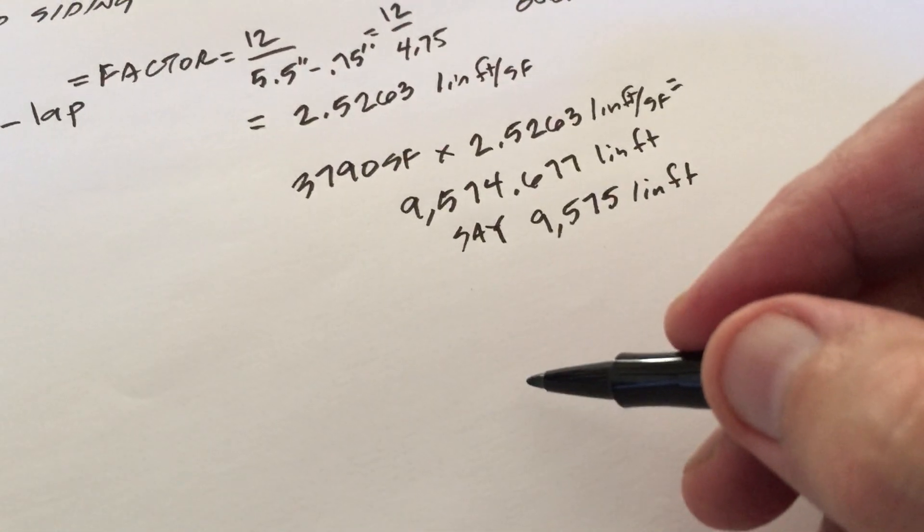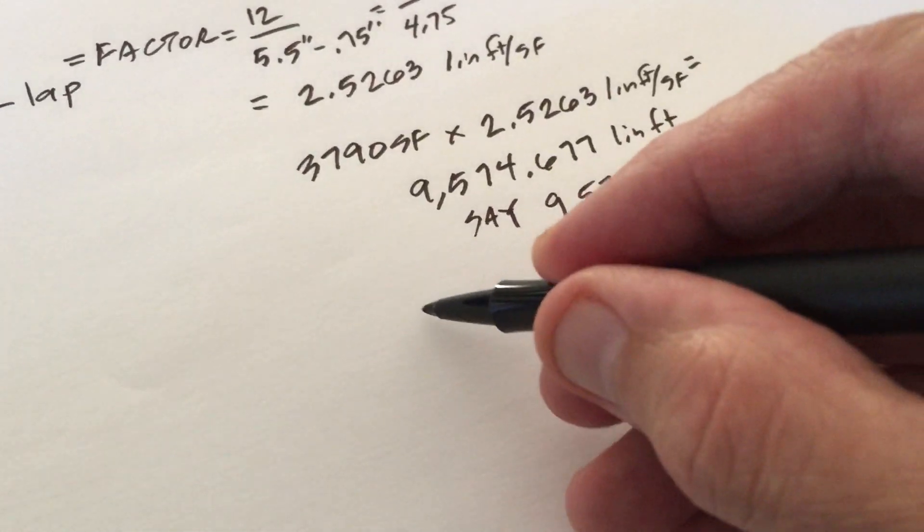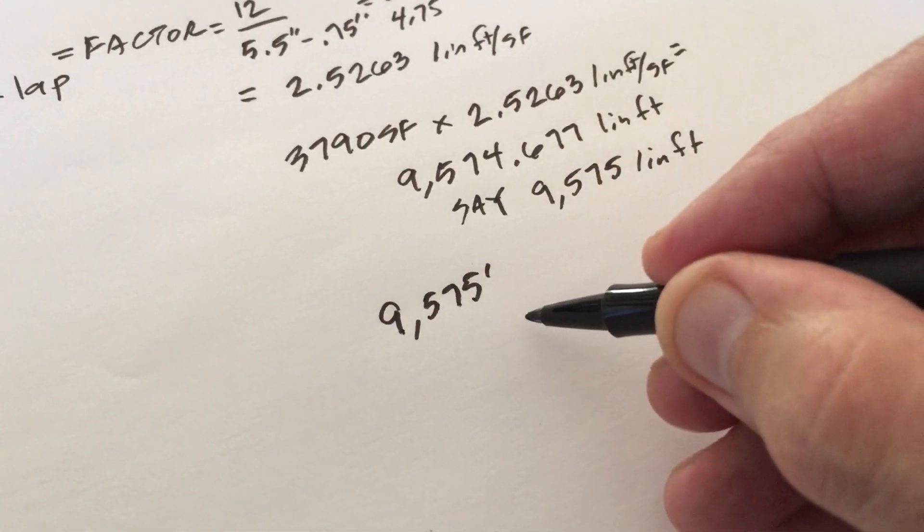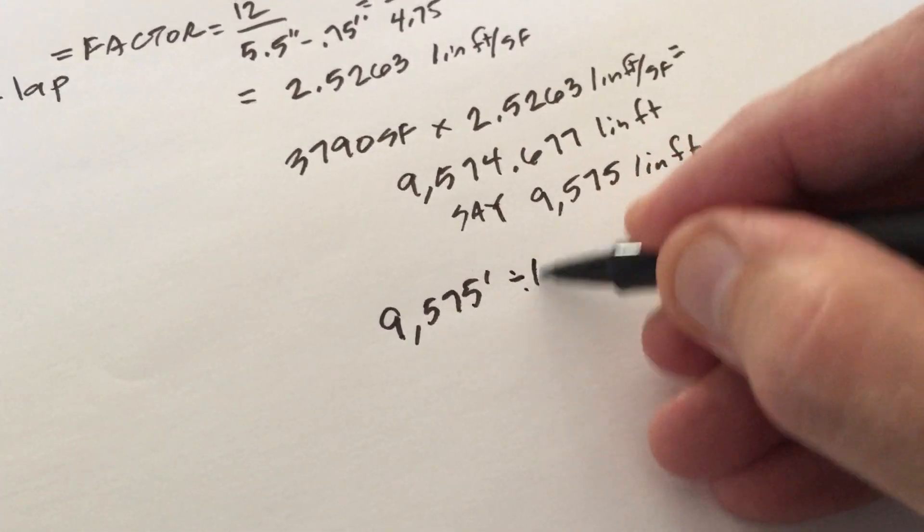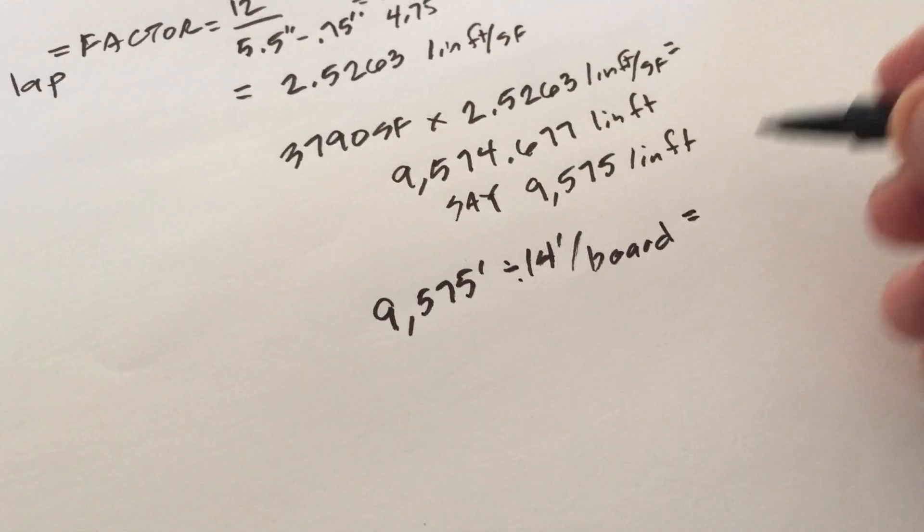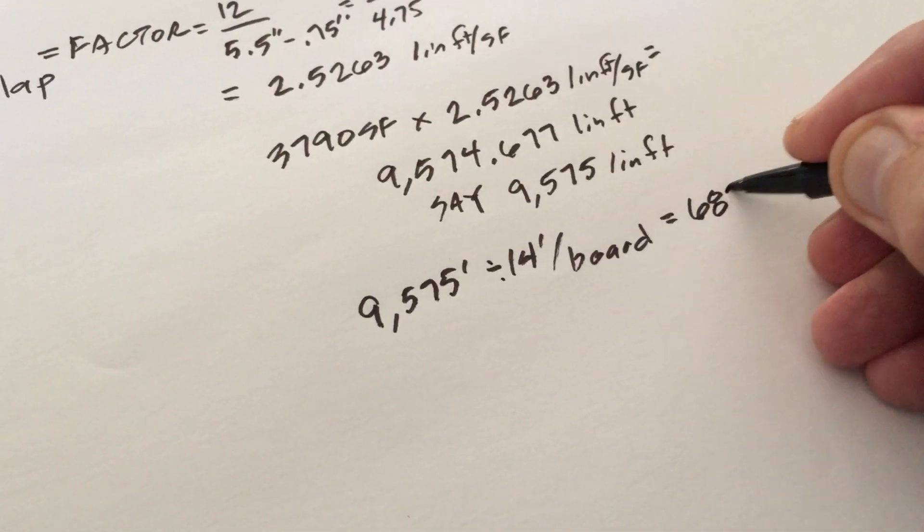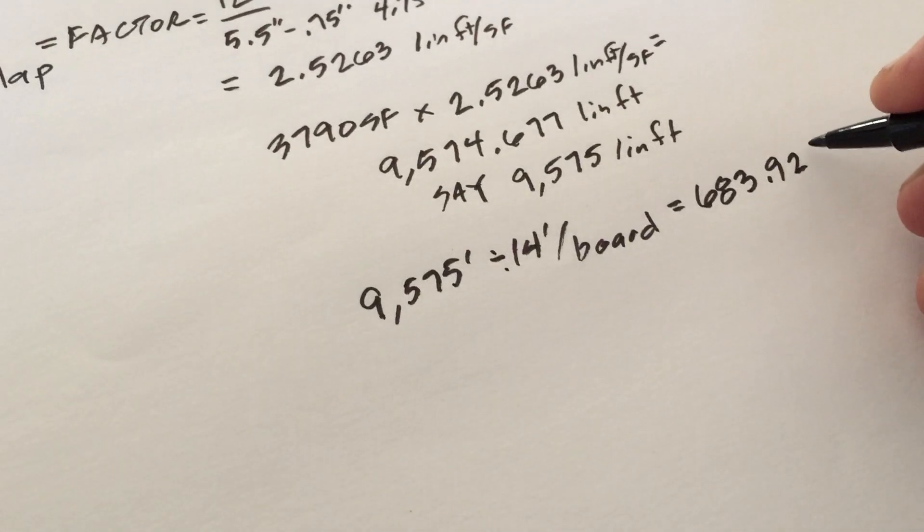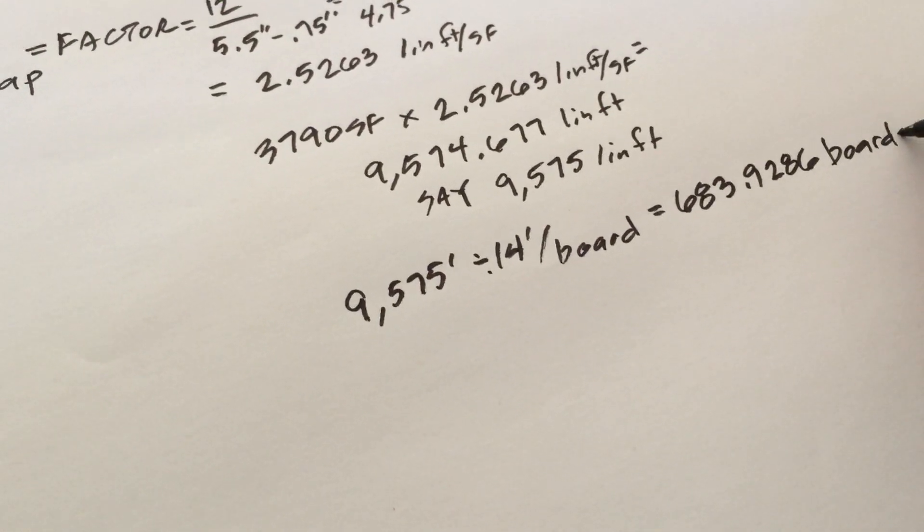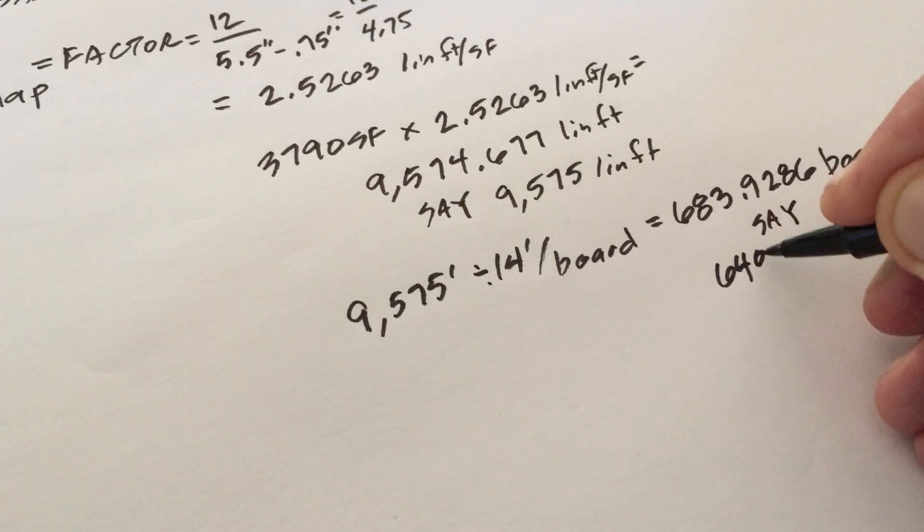How many 14 foot boards do I need? I'll take my overall linear feet here 9,575 feet and I'll divide that by 14 feet per board and that tells me how many boards I need and I'm going to get an answer of 683.9286 boards, say 684 boards.